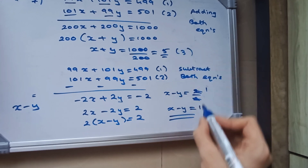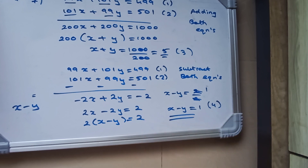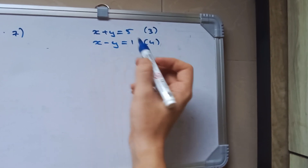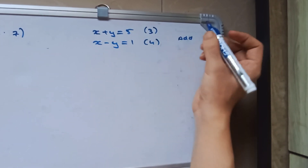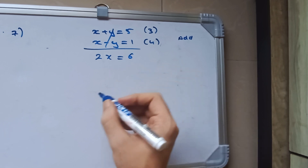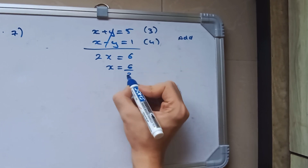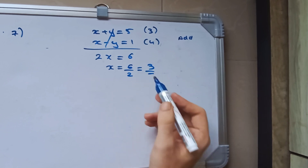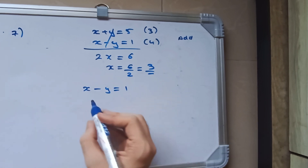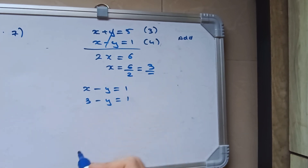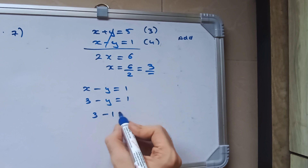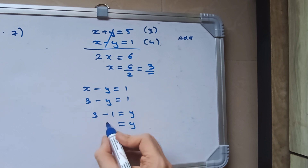So we got x plus y and x minus y. Now we just have to simplify these two simultaneous equations. We cancel y out by adding both equations: 2x is equal to 6, therefore x is equal to 6 upon 2, which is equal to 3. Substitute this value in x minus y equals 1: x is 3, so 3 minus y equals 1, therefore y is equal to 2.